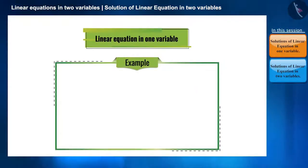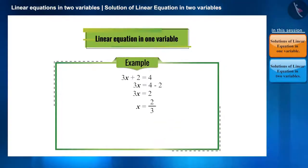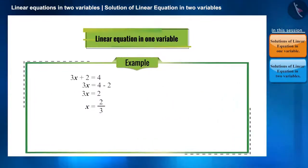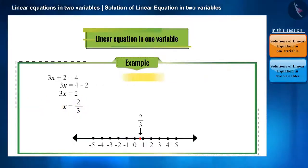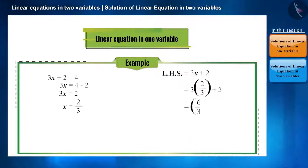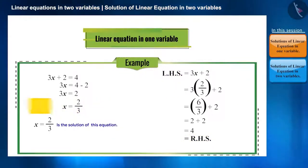3x plus 2 is equal to 4. A linear equation in one variable has only one solution. In this example, the value of x is found to be 2 by 3. This means there is a point on the x-axis which equals 2 by 3. Only when we keep the value of x equal to 2 by 3 will the equation 3x plus 2 equal 4 be satisfied — that is, RHS will equal LHS. No other value of x except 2 by 3 can satisfy the equation.